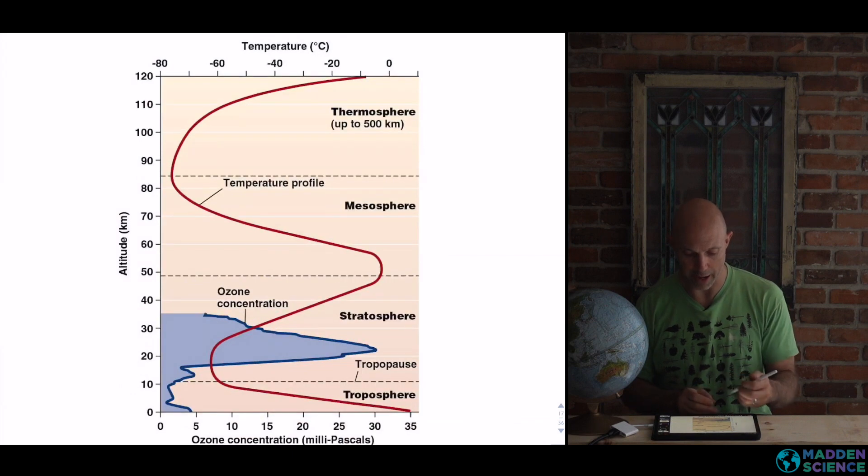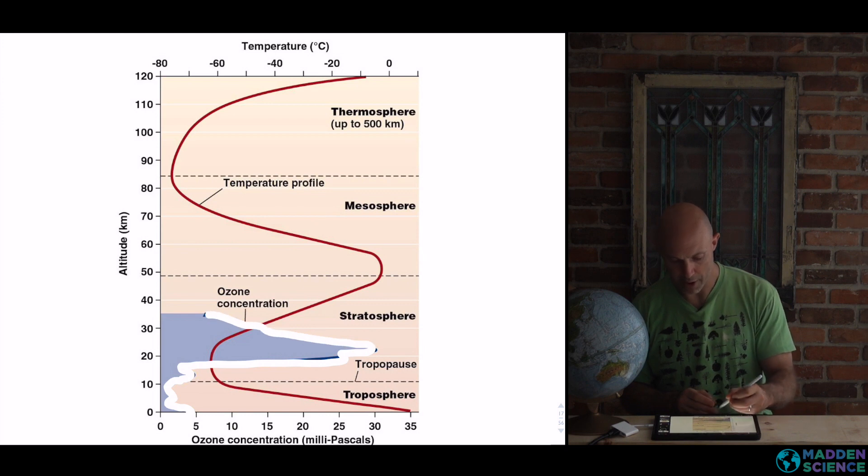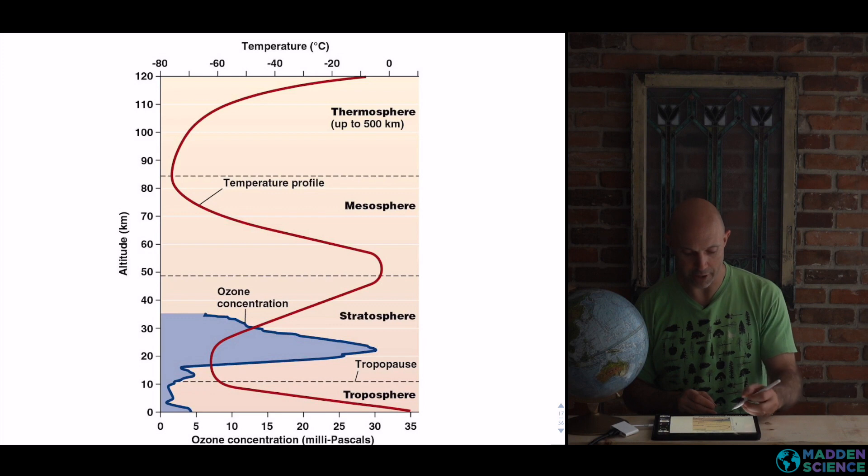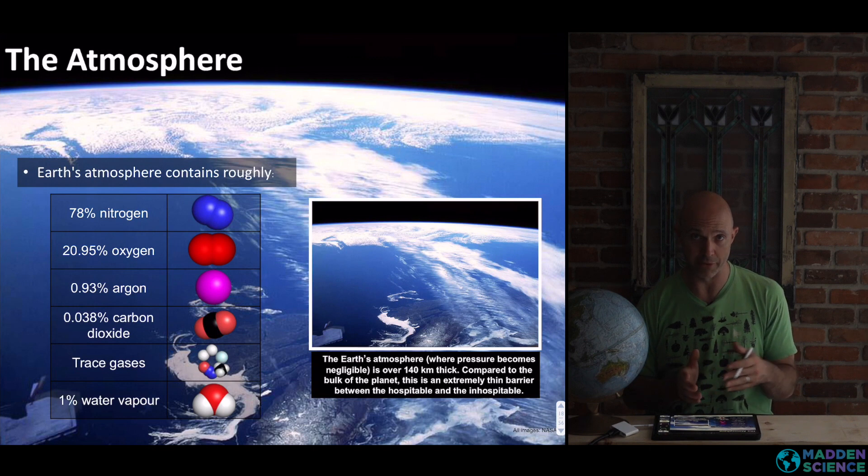I mentioned earlier concentration of ozone. So you can see it changing as we move up from troposphere to stratosphere. And the concentration really is in between 20 and 30 kilometers. So ozone concentration here in millipascals. So what is Earth's atmosphere made of? What is air?